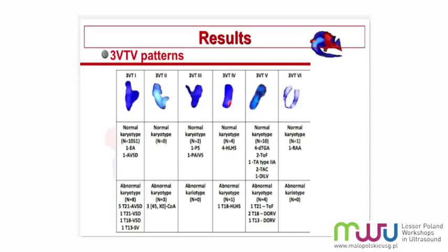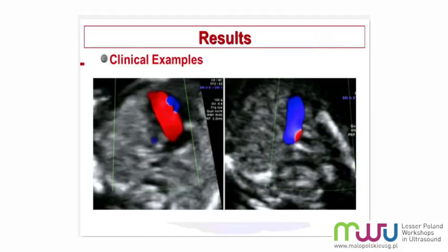Regarding the U-shape, you already know this pattern from the second trimester. In this study population, there was one case of right aortic arch. Here are several examples from our study group. This is a single inflow — you can see the vertical course of the vessel, and that was a left hypoplast.